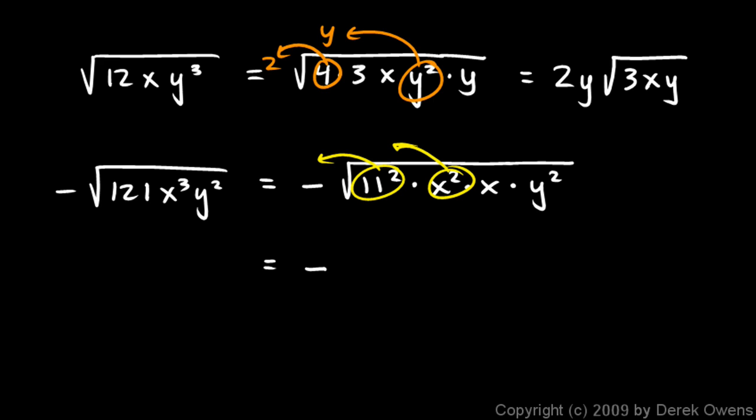The 11² just becomes an 11. And the x² and the y² all pop out. So we have an 11xy out front. And underneath we just have this lonely x there. 11xy times the square root of x. That's our answer. Negative, excuse me, negative 11xy times the square root of x.